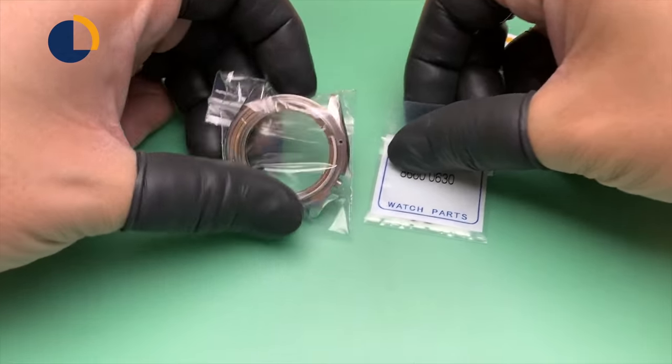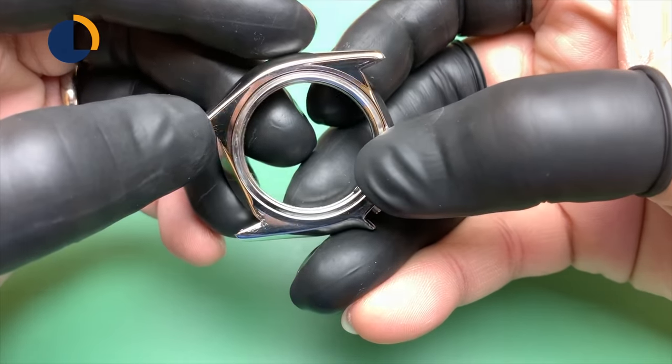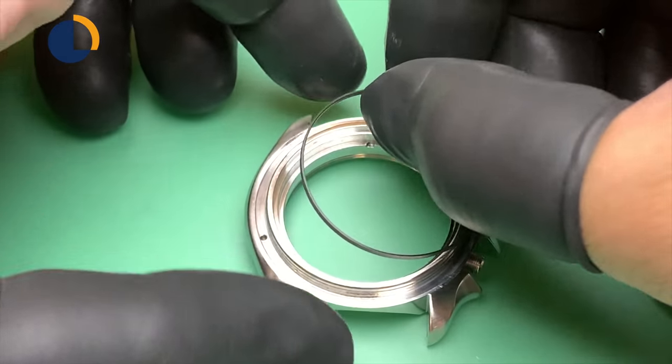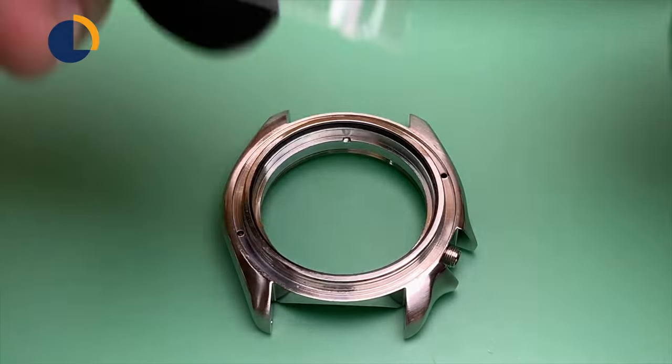The new crystal finally arrived from my customer and now we are assembling back the watch. You will see I installed the crystal gasket, the chapter ring and then the crystal, and I will use a crystal press to install the crystal.